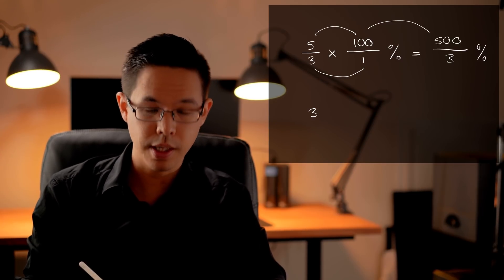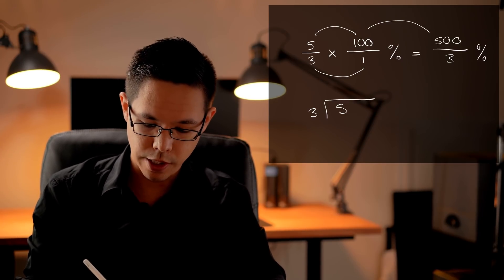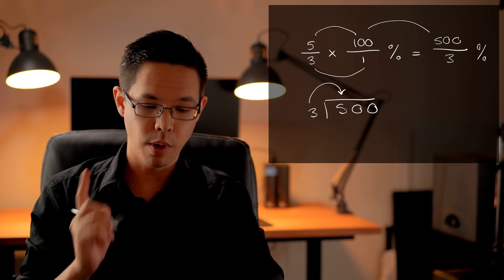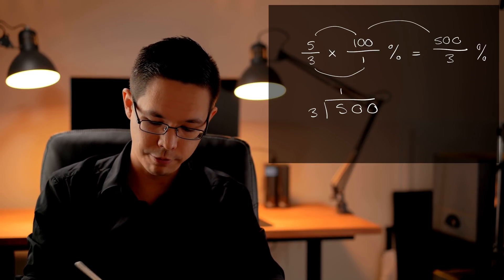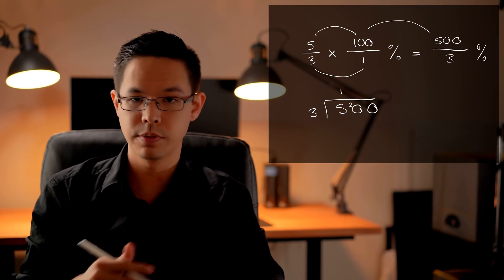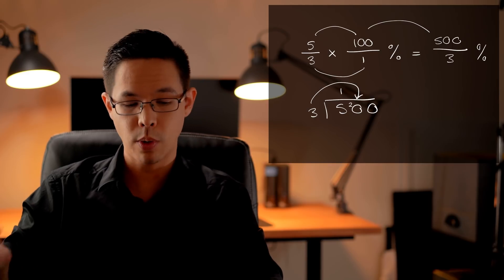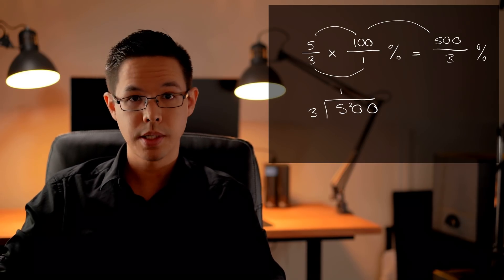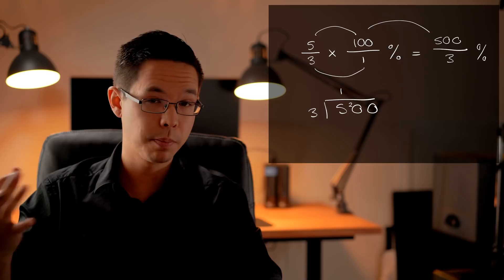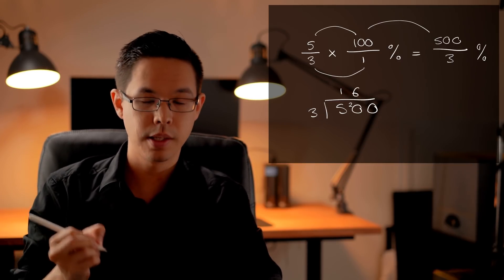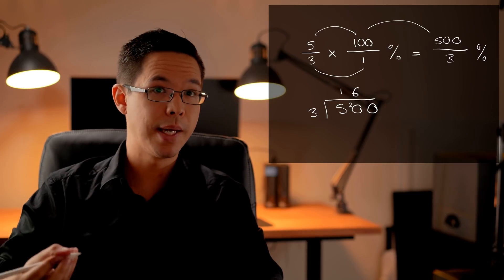So how many times can I fit 3 into 500? 3 fits into 5 once with 2 remaining so I fit in there 1. My 2 remainder goes onto the shoulder of the next digit. Now I look at how many times does 3 fit into 20? Well in that case 3 times 6 is 18. 18 is probably the biggest we can get within 20. So 3 lots of 6 fits in there with some remainder. That remainder is 2.